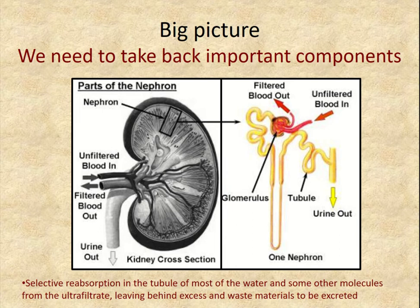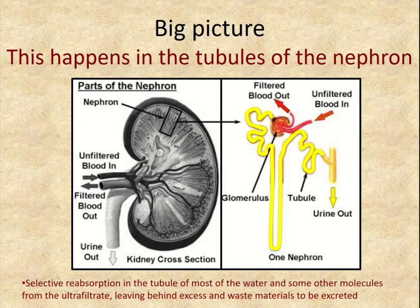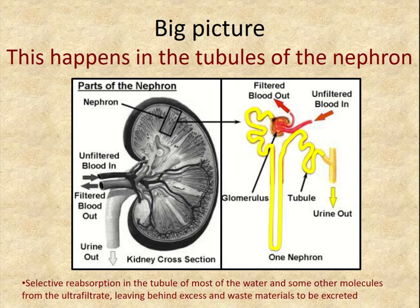Some products filtered out need to be reabsorbed because we don't want to excrete everything that passes through the glomerulus. A lot of the water from the plasma and other molecules — you'll learn the exact balance in physiology — will be reabsorbed, and everything else will be excreted. Most of that function happens in specialized tubules that are part of the nephron.